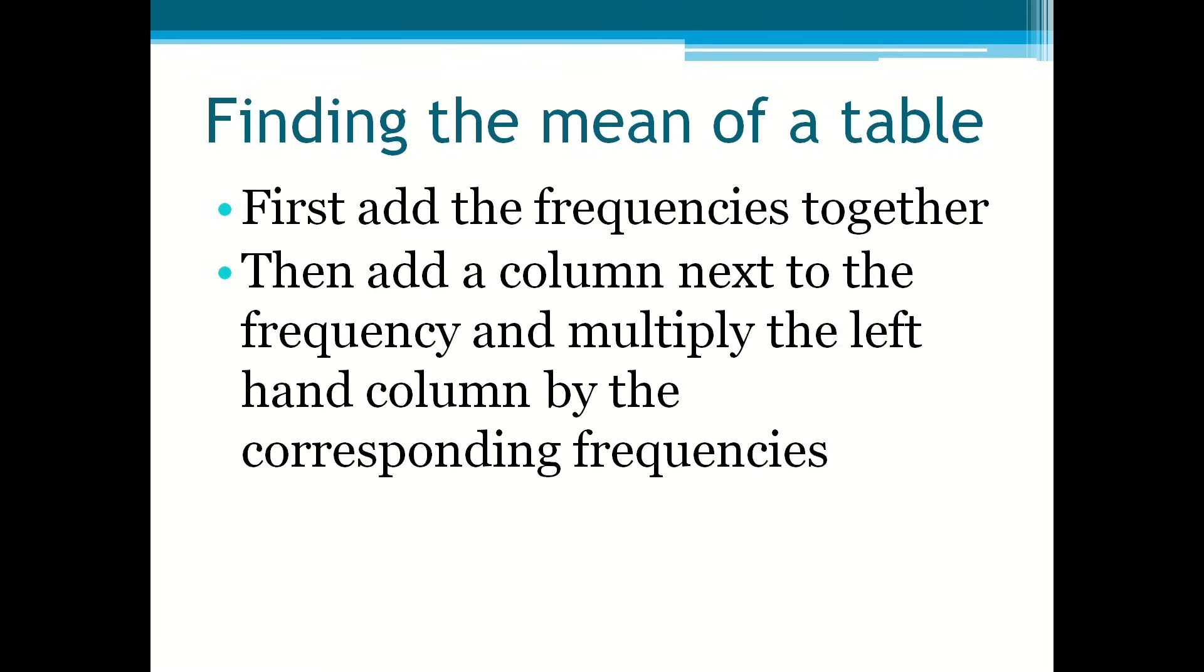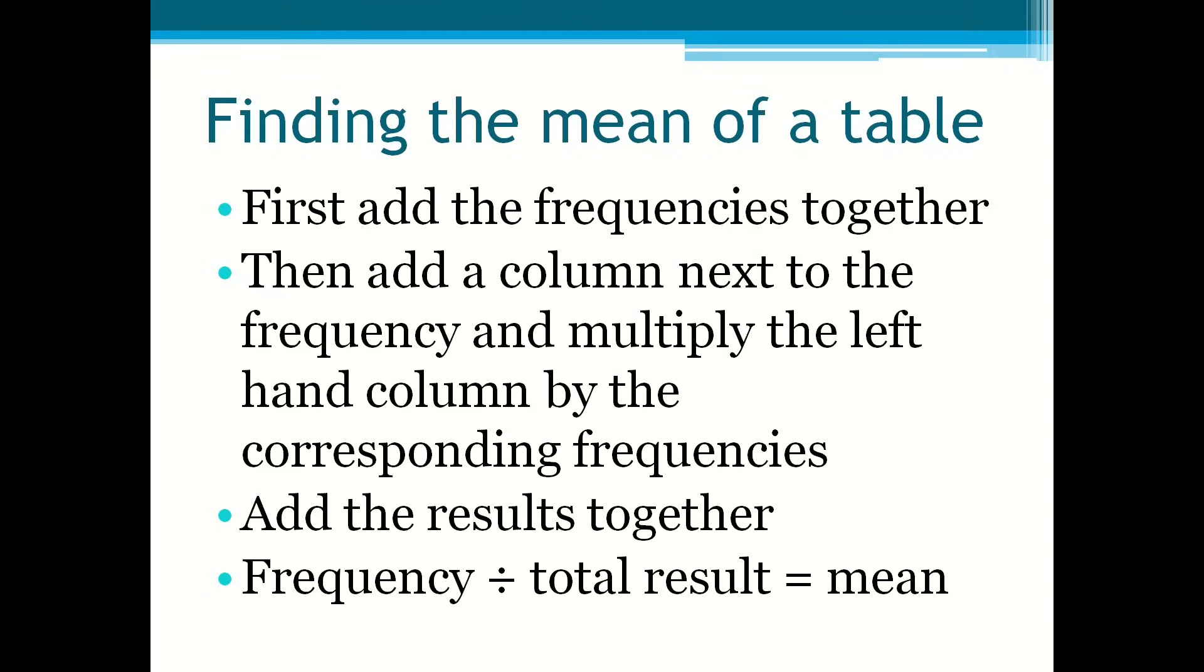First you add the frequencies together. Then add a column next to the frequency and multiply the left hand column by the corresponding frequencies. Add the results together and frequency divided by total result is equal to mean.